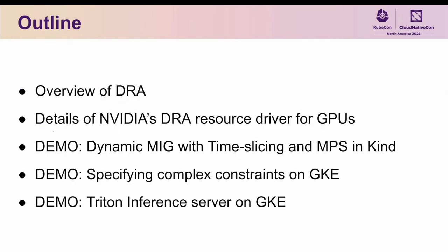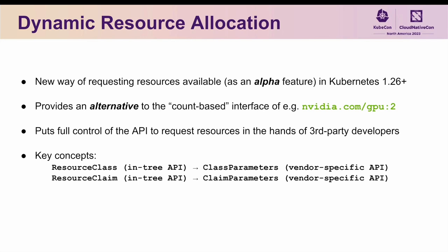I'll start off by giving a brief overview of DRA itself, followed by the specifics of the DRA resource driver for GPUs we have implemented at NVIDIA. I'll then jump right into a series of demos showcasing some of the more advanced features provided by this driver. As its name implies, DRA is a new way of requesting access to resources in Kubernetes that has been available as an alpha feature since 1.26. It provides an alternative to the existing count-based interface of asking for nvidia.com/gpu=2, for example.